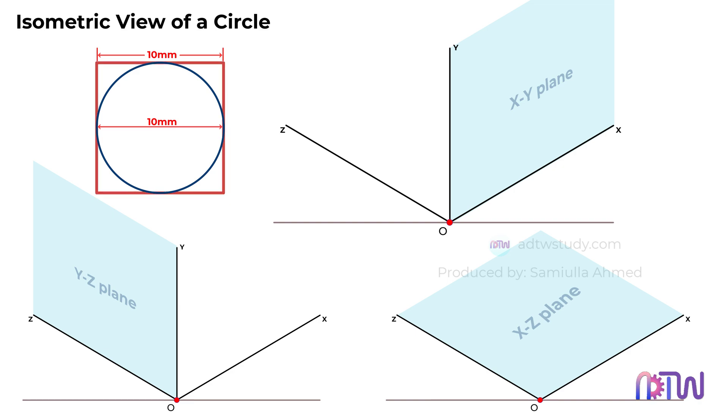Now, we need to draw this square on the plane where the circle is required to be drawn. The method is straightforward, so we will draw it simultaneously on all planes. When we draw this square in different planes, it looks something like this.